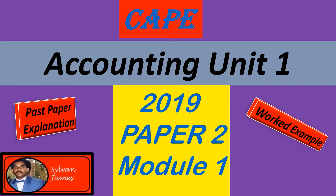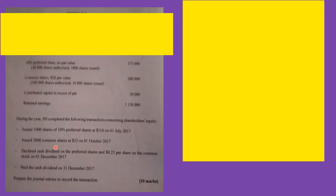Welcome to another Mr. James Accounting tutorial. Today I will be covering Accounting Unit 1, 2019 Paper 2 Module. We read what is required: prepare the journal entries to record the transactions. So they are asking us for journal entries. Next we read the body of the question.